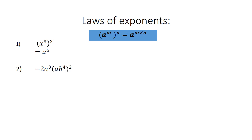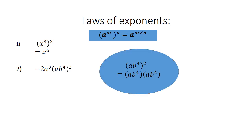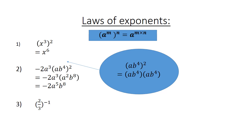B to the negative 4. You first multiply your brackets and now you have negative 2a to the power of 3. Inside the brackets we have a to the power of 2 and b to the power of 8. Simplify to get negative 2a to the power of 5 and b to the power of 8. In brackets: 2 over 3 to the power of negative 1 equals 2 to the negative 1 over 3 to the negative 1 equals 3 over 2.